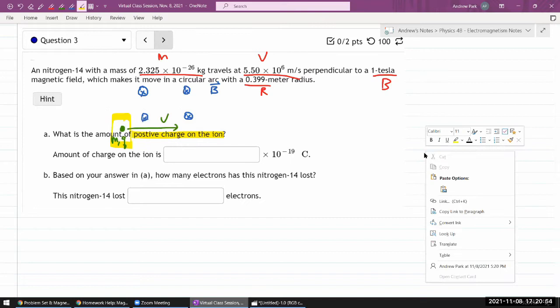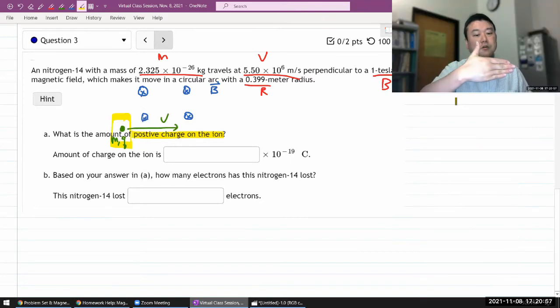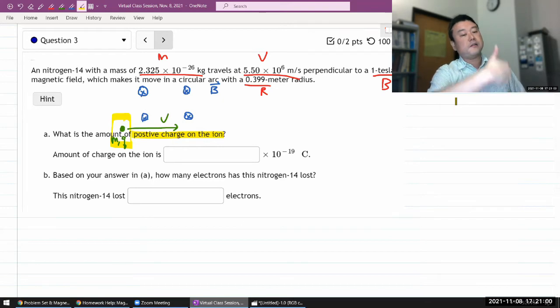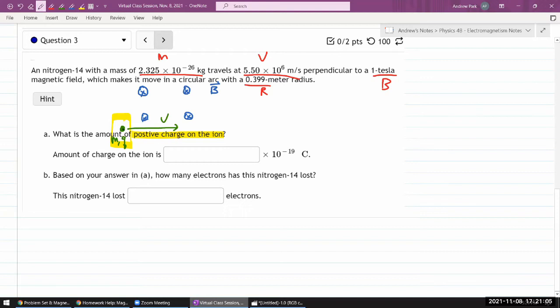With v cross b, this charge feels an upward force. So as this charge moves in this magnetic field, it's going to bend upward. The thing to remember about magnetic force is that at this position of the charge moving this way, the force is still perpendicular pointing into some center of the circle. That's why it's saying which makes it move in a circular arc with some radius.